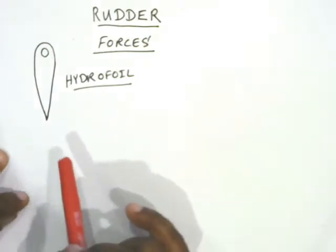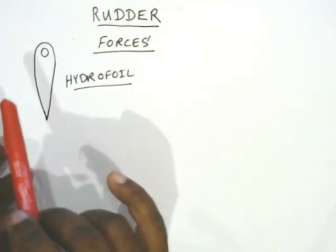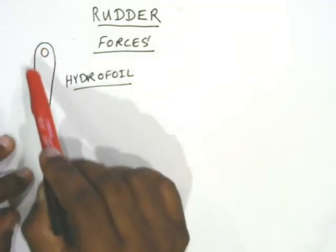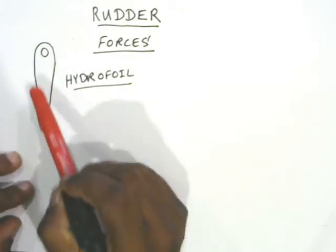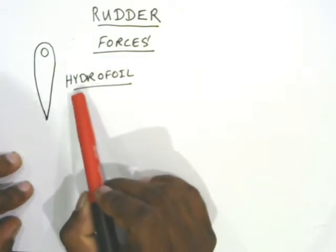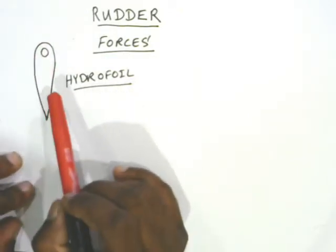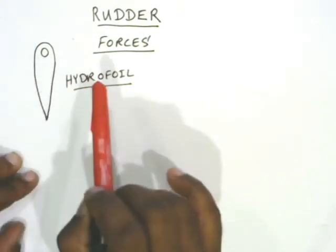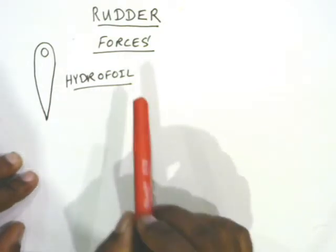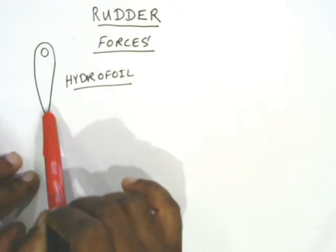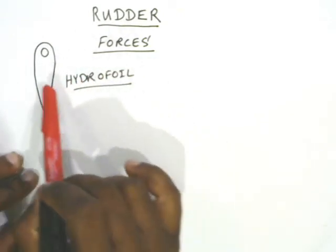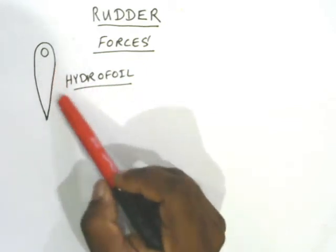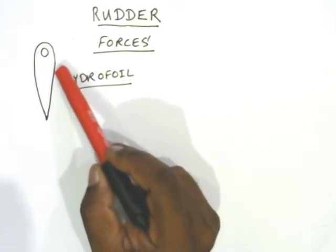If you look at the cross-sectional shape of the rudder, this is the shape you can see on ships, which is called the hydrofoil shape. If you look closely, this shape has a similarity to aircraft wings — not exactly, but there is a similarity. In the aircraft wing that shape is called an aerofoil shape, but since the rudder is acting on liquid, this shape is called a hydrofoil shape.